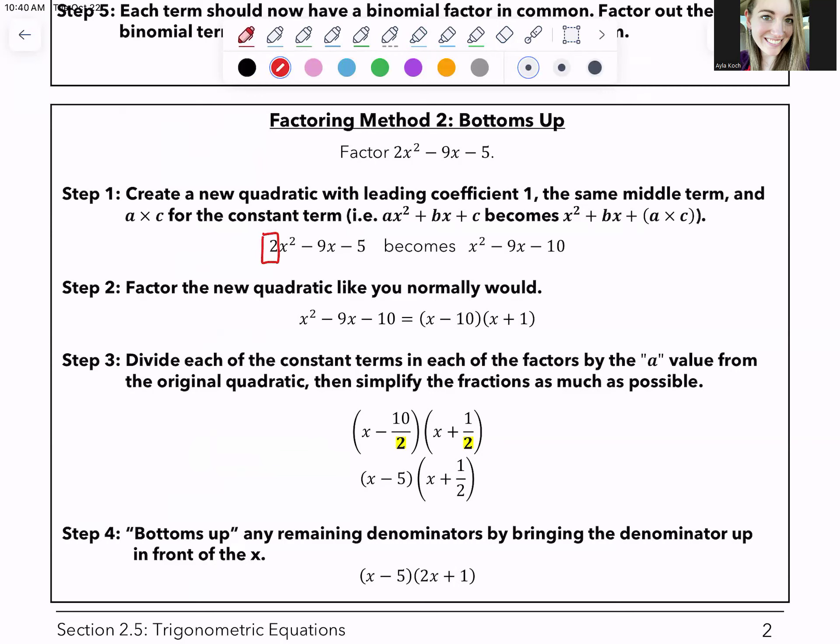So the idea is you take the number out in front here, the A value, and you multiply it by the C value. So 2 times negative 5 would be negative 10. And then you disappear that 2, so there's no 2 up here. And then you take that negative 10, boom. So you multiply 2 and negative 5, get rid of this 2. This becomes whatever 2 times negative 5 is. So you end up with x squared minus 9x minus 10. So you factor this thing the way you normally would, which is looking for two numbers that multiply to negative 10 and add to negative 9. And you say, oh, well, those two numbers would be negative 10 and 1.